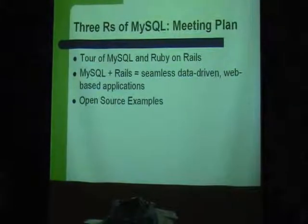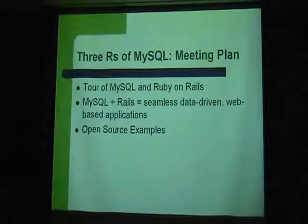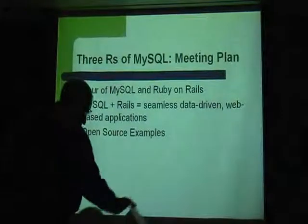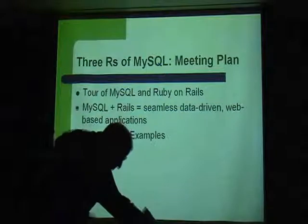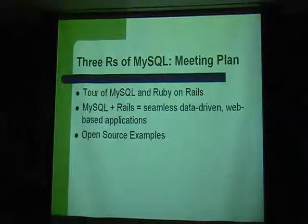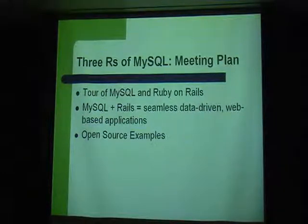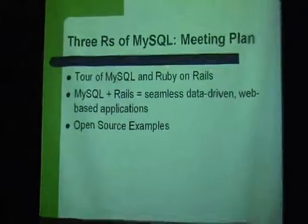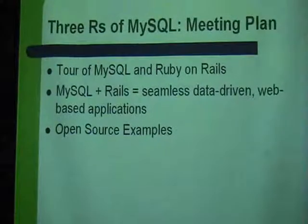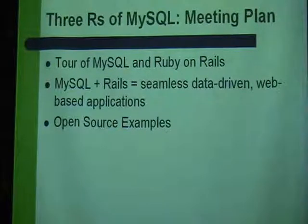Then Dave Thomas and a few other folks saw the beauty of Ruby. They had skills in documentation and technical writing, and got together a small group who started to develop documentation on how Ruby worked and what you could do with it. It really caught on like wildfire, particularly over the past three or four years. The working title of this talk is the Three R's of MySQL — Ruby, Rails, and a tour of MySQL and Ruby on Rails.